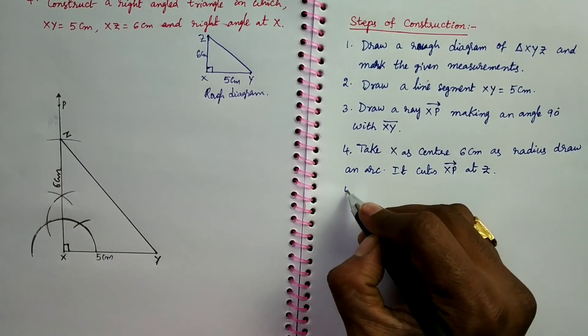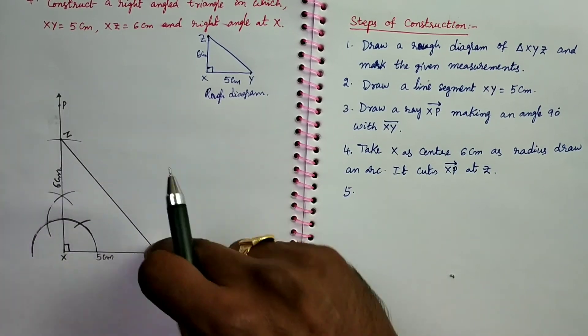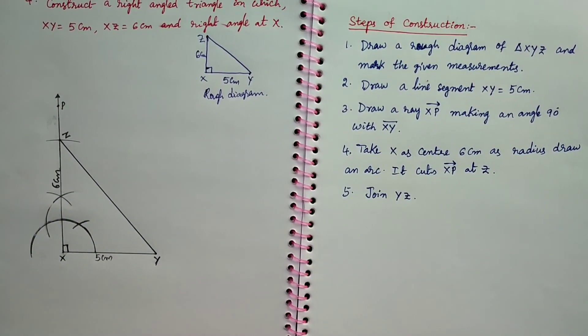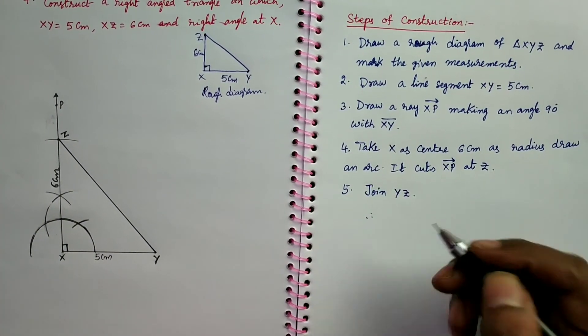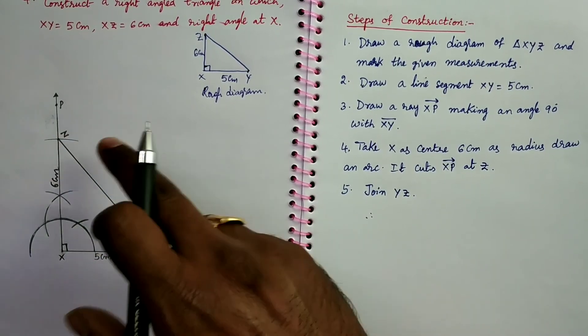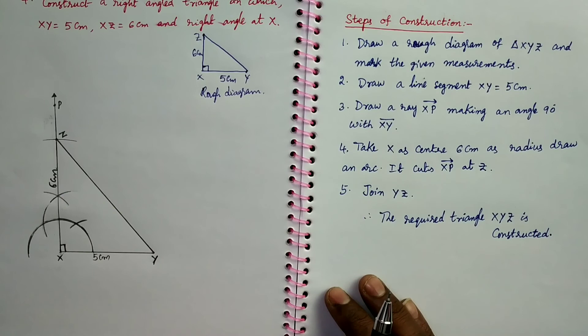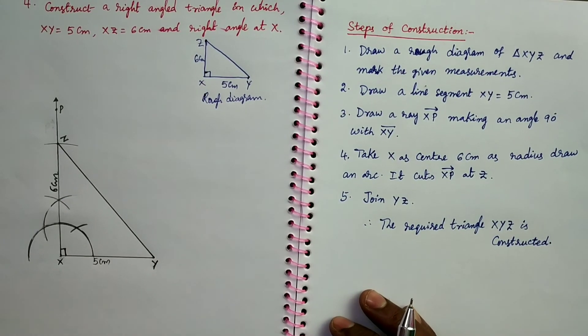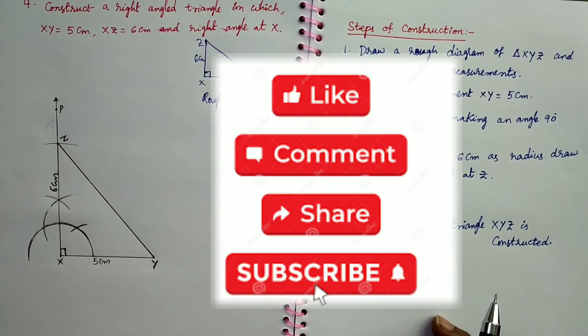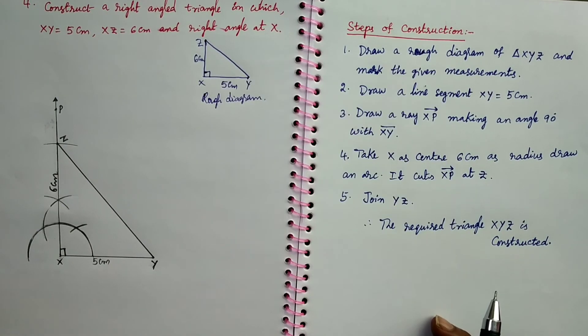Then next step is: Join YZ. Therefore, the required triangle XYZ is constructed. This construction is completed. If you like this video, please like it and share it to your classmates and friends and subscribe for more videos. Thank you for watching.